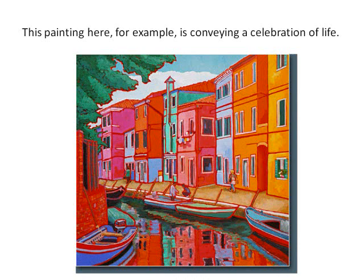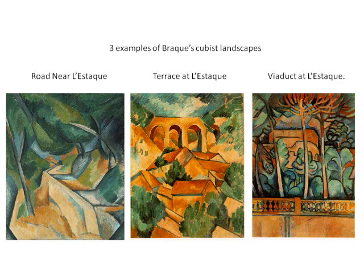Braque began his career by painting Impressionist paintings, and by 1906 he began painting in a Fauvist style. Although some of the Cubist artists had previously been a part of the Fauvism movement, Fauvism and Cubism are very different. Cubism focused on real things and being able to see them from all points of view, while Fauvism focused on bright colors and feelings.